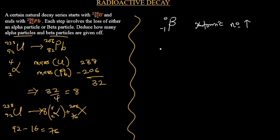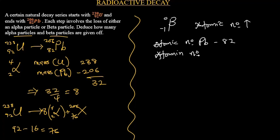The atomic number of lead is 82, and that of element X is 76. We are trying to find how many beta particles can be emitted to give us atomic number 82. So we subtract 76 from 82: 82 minus 76 gives us 6. That means 6 beta particles are emitted.